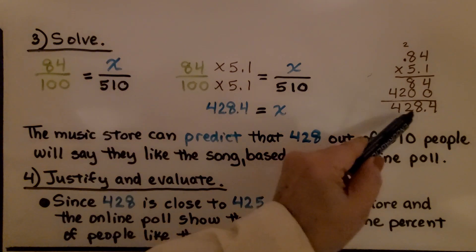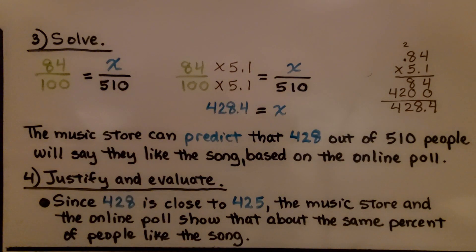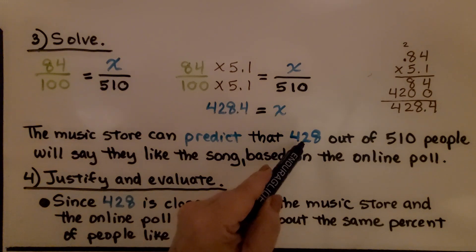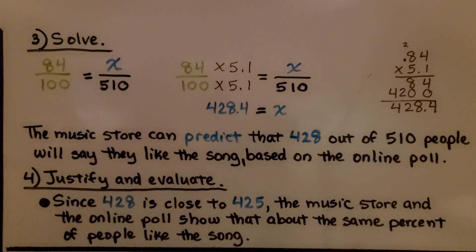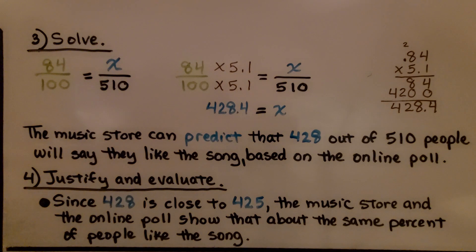We get 428.4. X is equal to 428.4. The music store can predict that 428 out of 510 people will say they like the song based on the online poll — we can't have 4 tenths of a person. Now we justify and evaluate: since 428 is close to 425, the music store and the online poll show that about the same percent of people like the song.